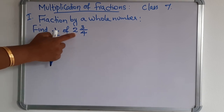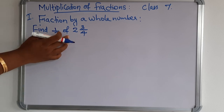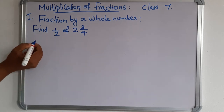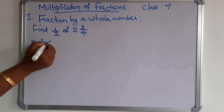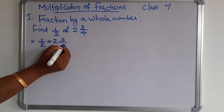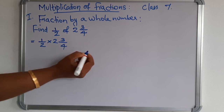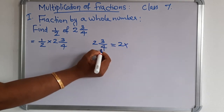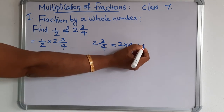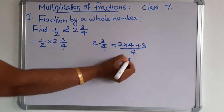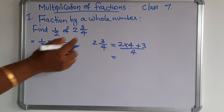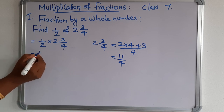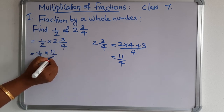Next question: find 1/2 of 2¾. We already discussed that 'of' means multiplication. This is a mixed fraction that we need to convert. So we write 1/2 × 2¾. To convert 2¾: whole number × denominator + numerator, divided by denominator. 2 × 4 = 8, and 8 + 3 = 11. So 2¾ = 11/4. We now write 1/2 × 11/4.